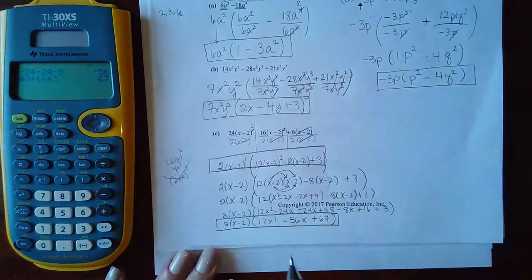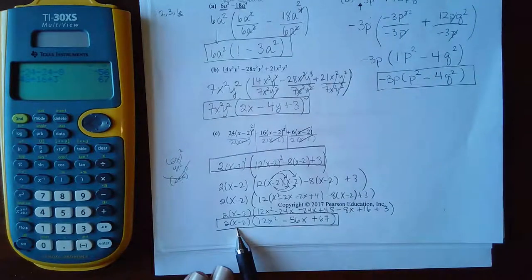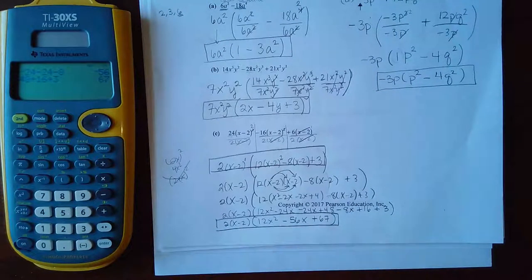If they accept this, fantastic. But if they want it in that form of your GCF times another polynomial, then you do have to multiply it all out. So it's really going to bring in all of those basic skills that we should have on knowing how to square a binomial, knowing how to distribute and knowing how to combine our like terms.